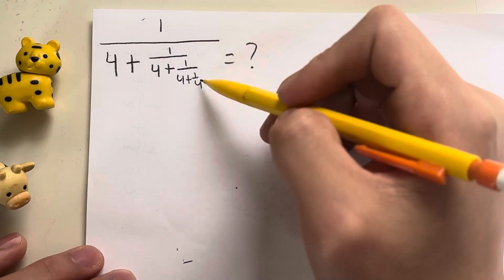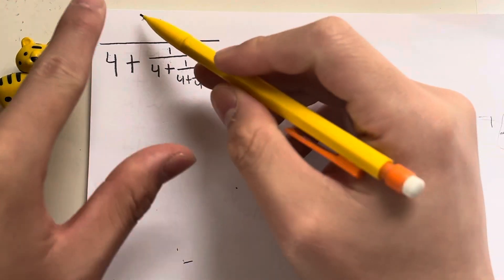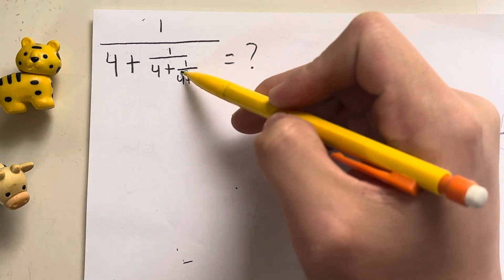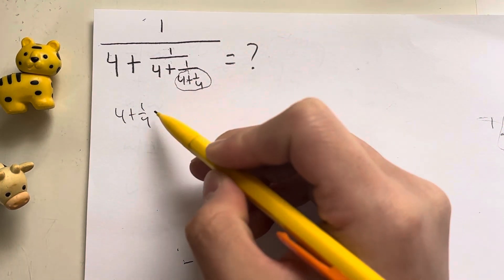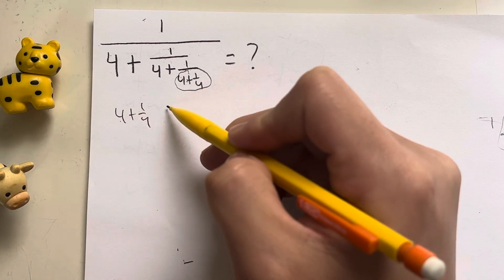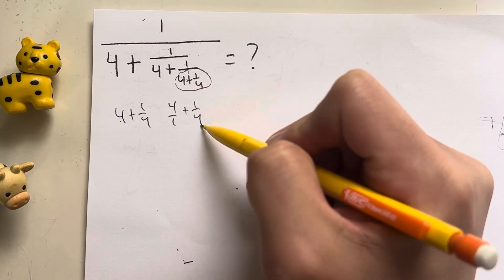So we want to solve this equation, and in order to do that, we have to work from the bottom all the way to the top. So what do I see first? I see 4 plus 1 over 4. So 4 plus 1 over 4, how do I convert this? Basically 4 is the same as 4 over 1 plus 1 over 4.